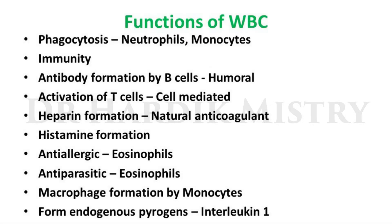Functions of WBCs include: phagocytosis — performed by neutrophils and monocytes; immunity — antibody formation by B-cells maintaining humoral immunity; activation of T-cells mediating cell-mediated immunity; heparin formation, which is a natural anticoagulant; histamine formation with anti-allergic function; anti-parasitic function of eosinophils; and macrophage formation by monocytes. When monocytes migrate from blood vessels into tissue, they increase in size and are called macrophages. They also form endogenous pyrogens such as interleukin-1.